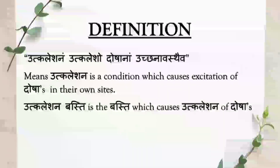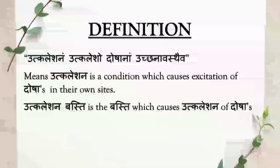Definition of Utkleshanabasthi: Utkleshana is a condition which causes excitation of doshas in their own sites. Utkleshanabasthi is the basti which causes Utkleshana of the doshas.